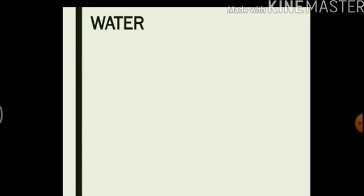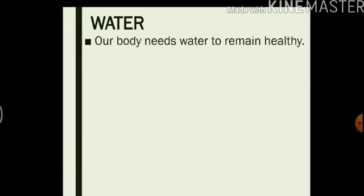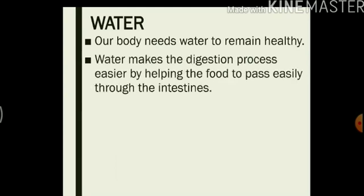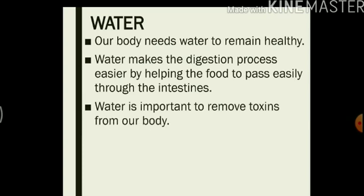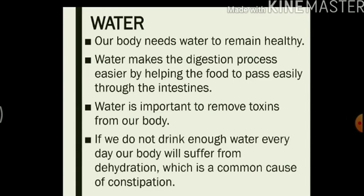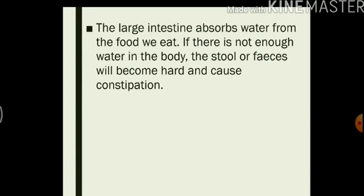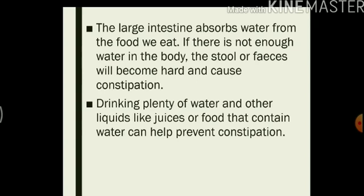Now we will talk about another important factor for our digestion, that is water. We already studied how our body needs water to remain healthy. Water also makes the digestion process easier by helping the food to pass easily through the intestine. Water is important to remove toxins from our body. If we do not drink enough water every day our body will suffer from dehydration, which is a common cause of constipation. Dehydration is when there is less water in your body. The large intestine absorbs water from the food we eat. If there is not enough water in the body, the stool or feces will become hard and cause constipation. Drinking plenty of water and other liquids like juices or food that contains water can help prevent constipation.